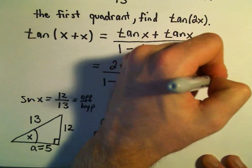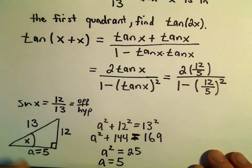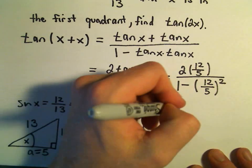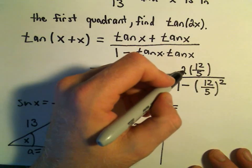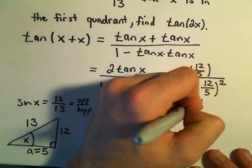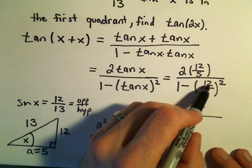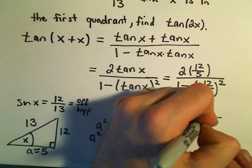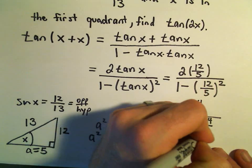So again, 12 over 5 quantity squared. Let's see if we can clean this up a little bit. So in the numerator, you can think about 2 as being 2 over 1, so that would give us 24 over 5 when we multiply. We would get 1 minus - let's see, 12 times 12 would be 144, 5 times 5 is 25.